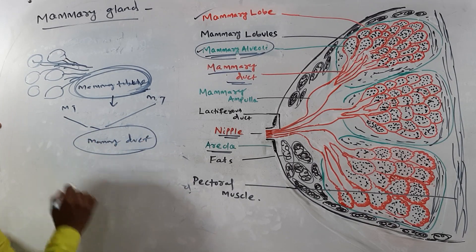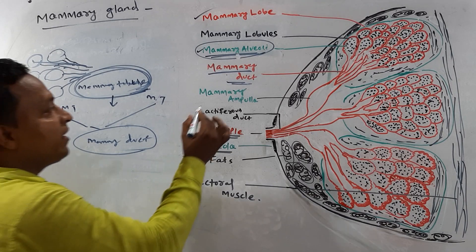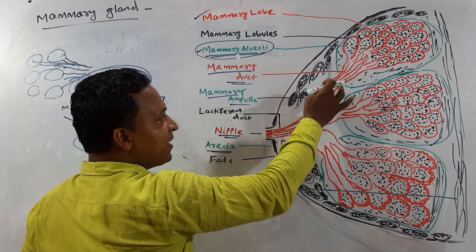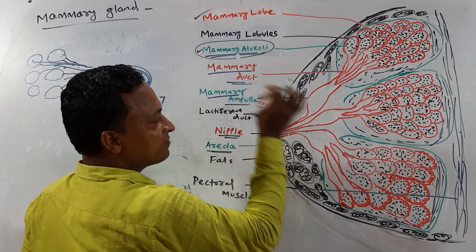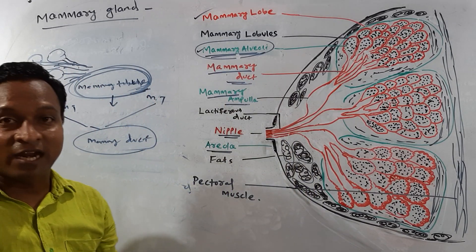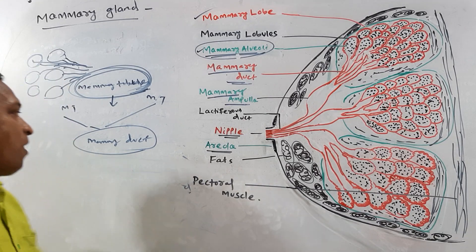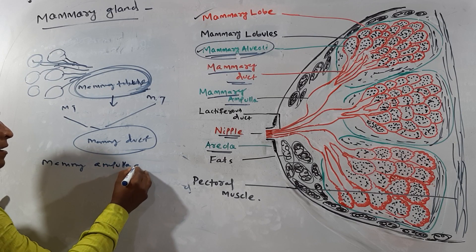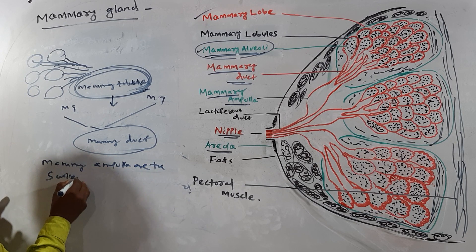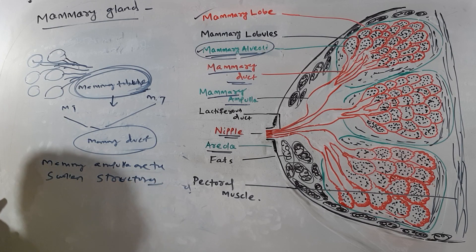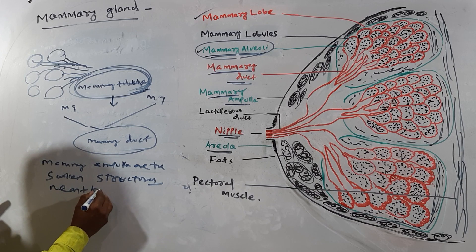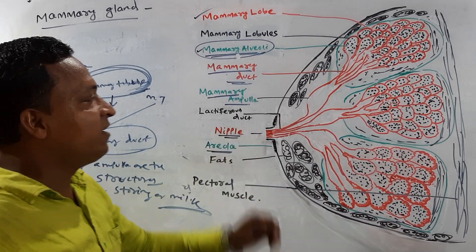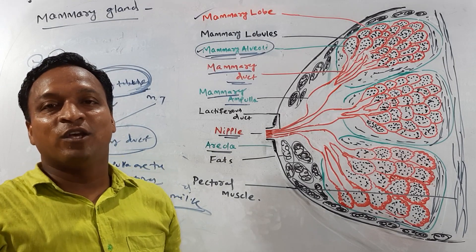When a number of mammary ducts are combined, they produce a larger structure called the mammary ampulla. The mammary ampulla is a sac-like structure meant for storing milk.